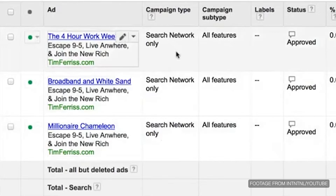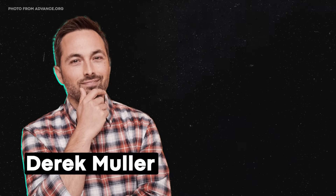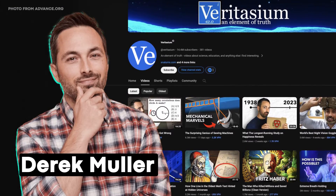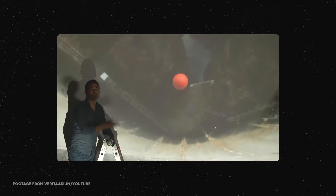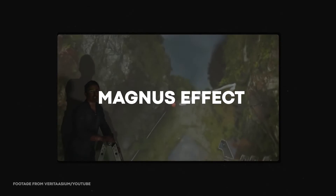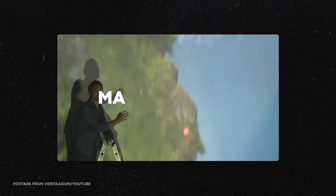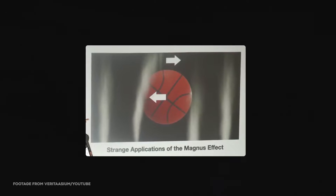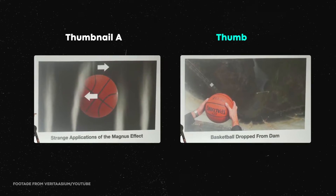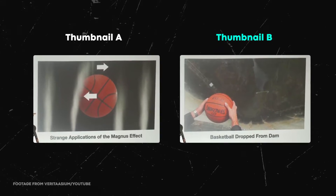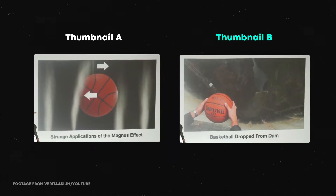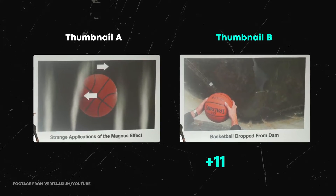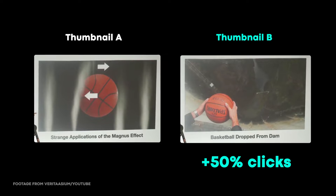Another commonly used example is Derek from Veritasium, who tested YouTube video thumbnail options for a video about an effect called the Magnuson effect involving a basketball. One version had a more scientific name and a static image of a basketball, while another conveyed anticipatory emotion — making you want to see what happens as the basketball goes over the waterfall. That emotional, anticipatory version massively increased clicks by over 50%.